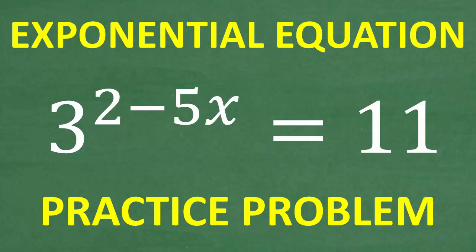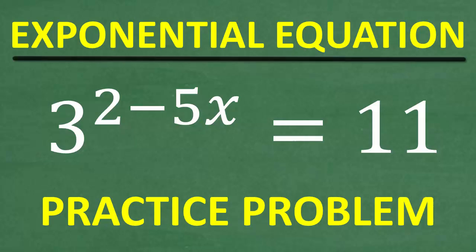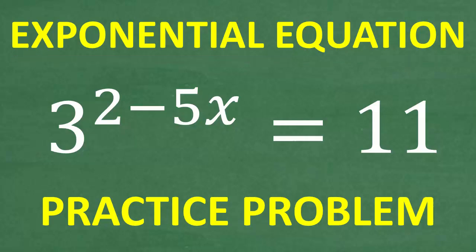Let's solve this equation. What type of equation is this? Well, it says right here this is an exponential equation, and that is correct. Why is this an exponential equation? It's an exponential equation because the variable x is right up here sitting in the exponent.